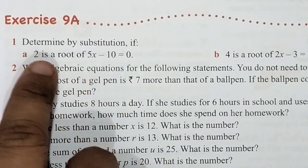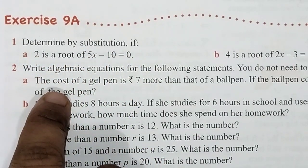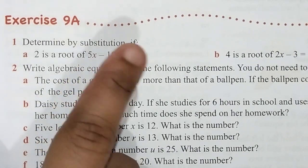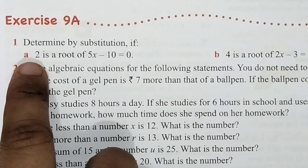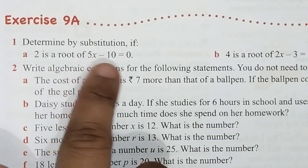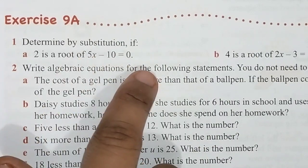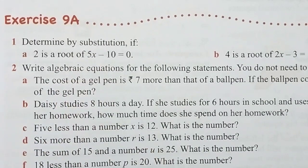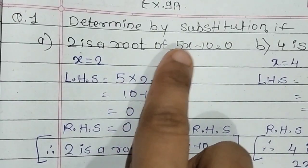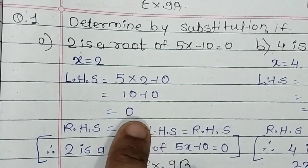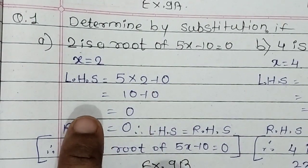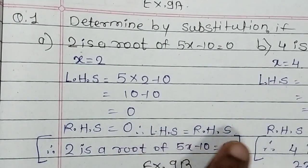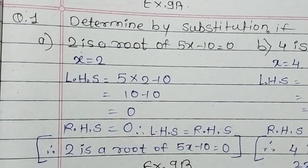This is an equation. Root means the unknown value, which is x. We need to check if x's value is 2. If 0 comes as the answer, then 2 is confirmed as the root. So, 5x means 5 into 2 minus 10, which gives 0. LHS equals 0 and RHS is already 0. Since LHS equals RHS, it means 2 is the root of this equation.